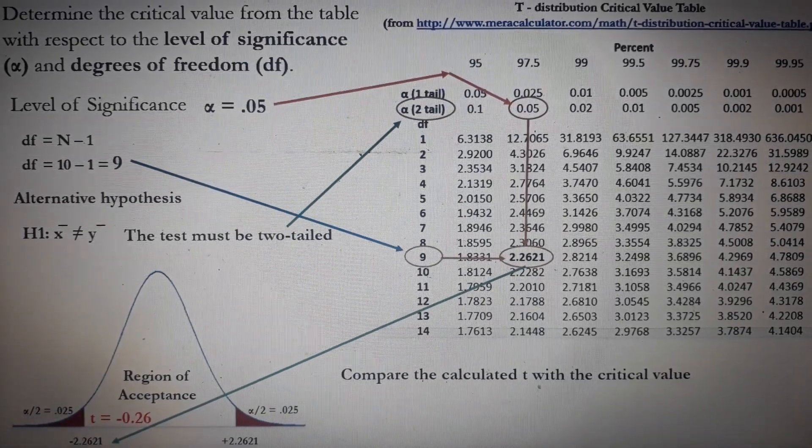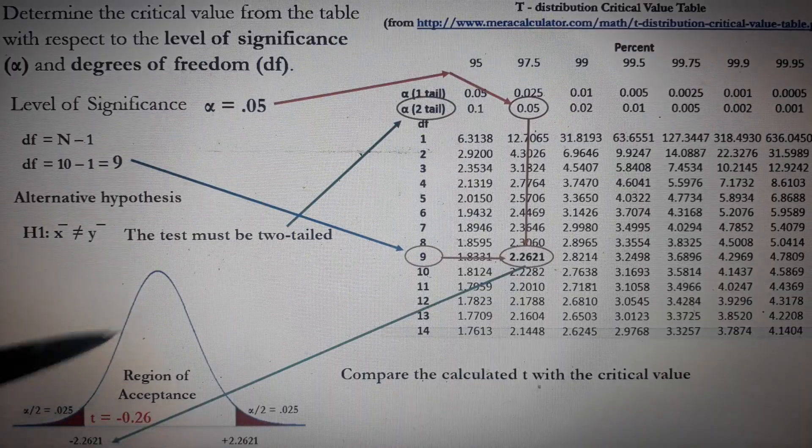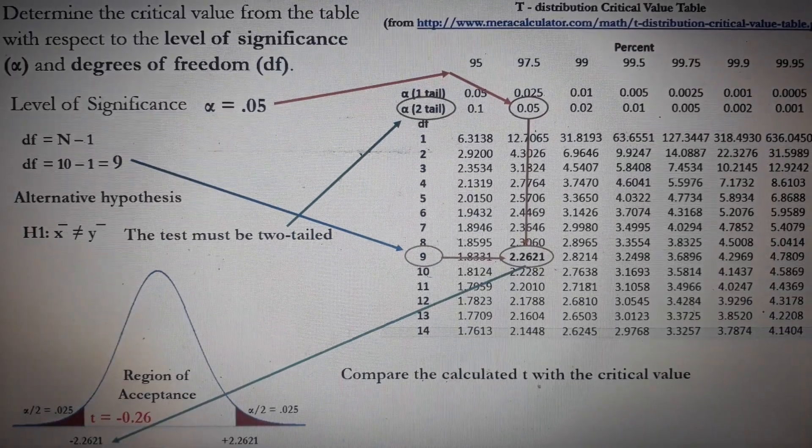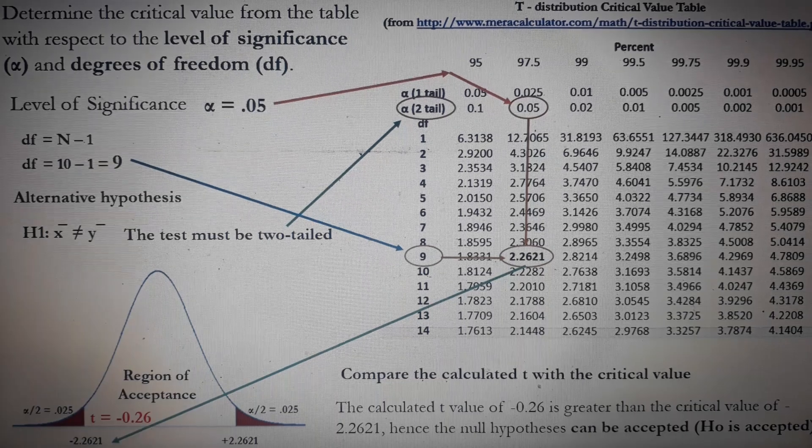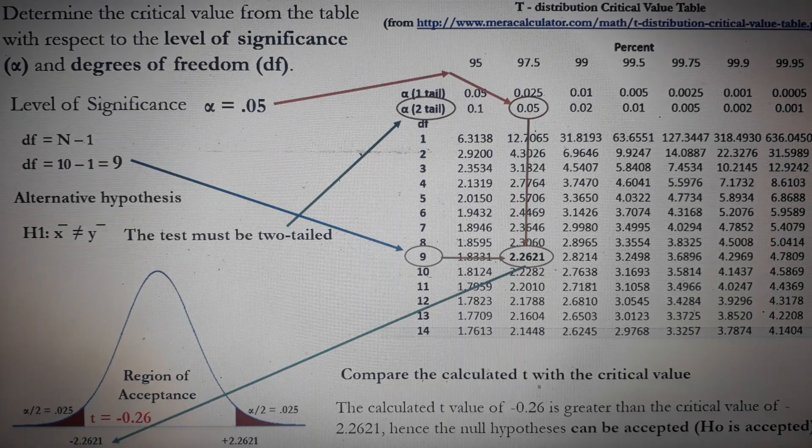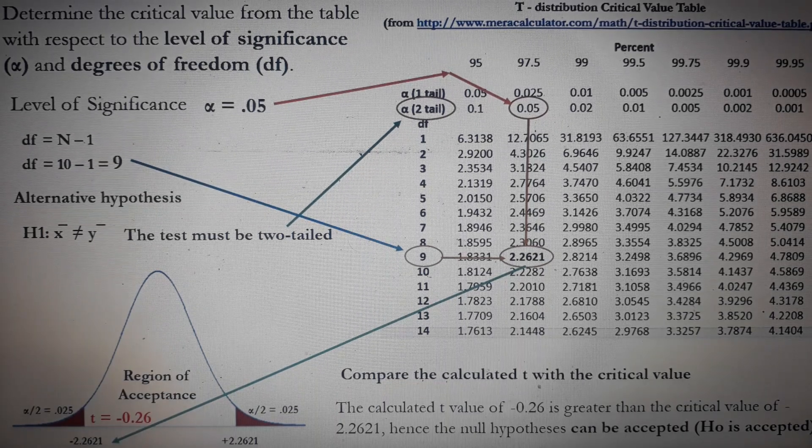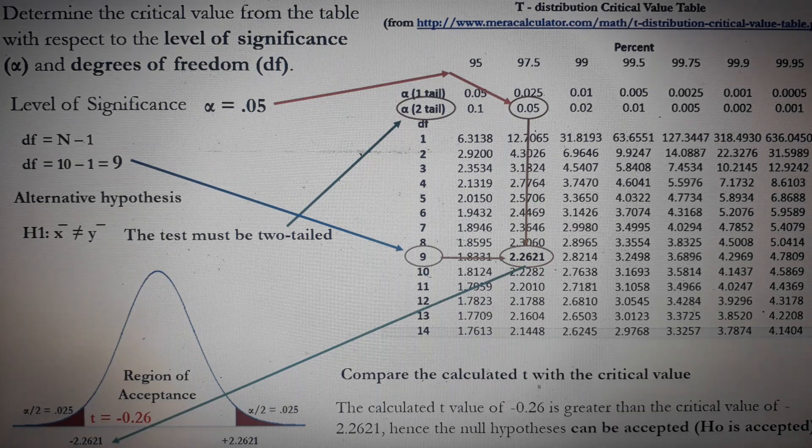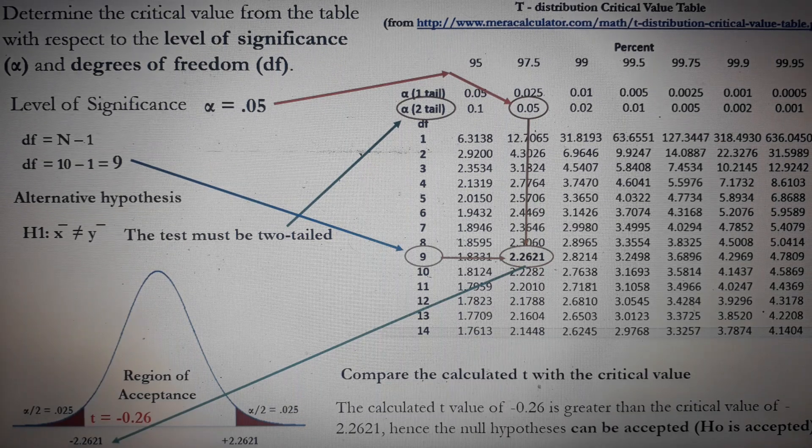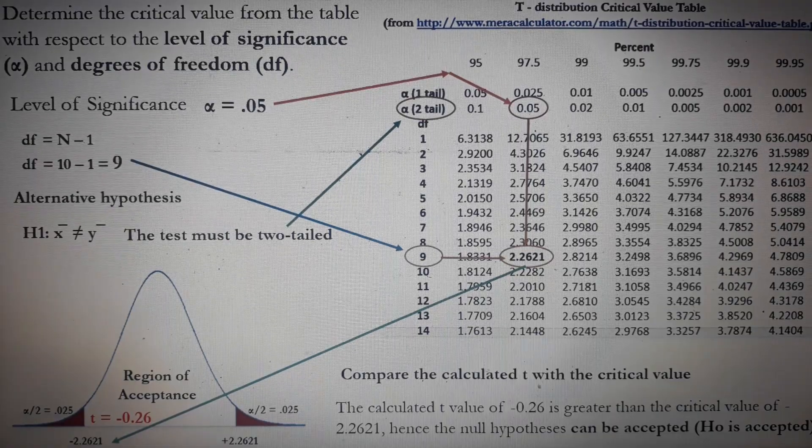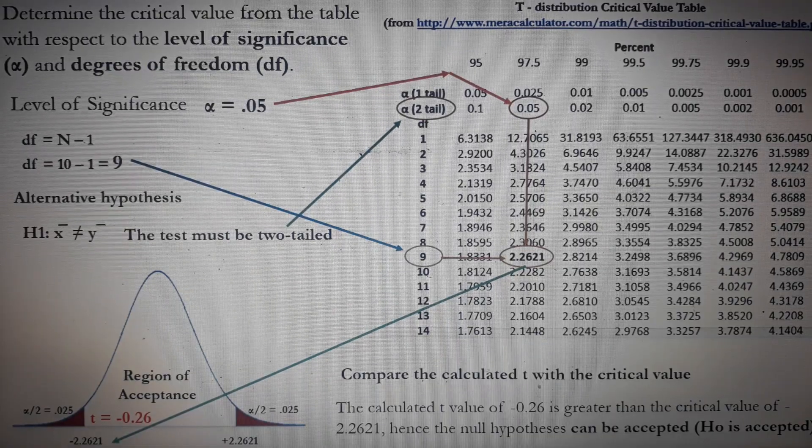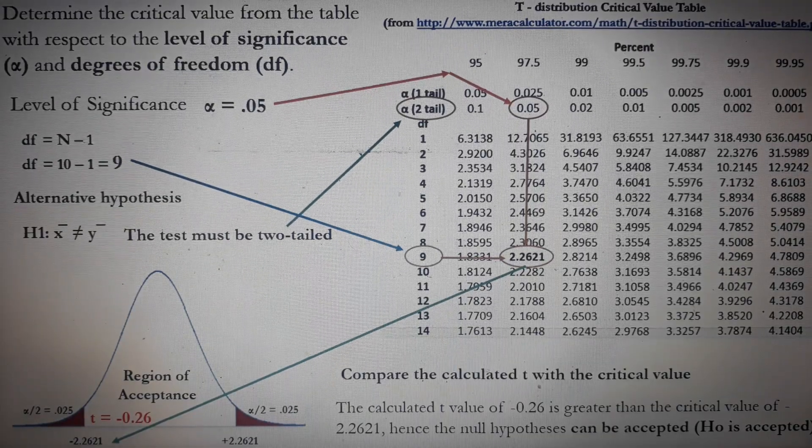Therefore, it's in the region of acceptance. We can say that the calculated T value of negative 0.26 is greater than the critical value of 2.261. Hence, the null hypothesis can be accepted. HO is accepted.